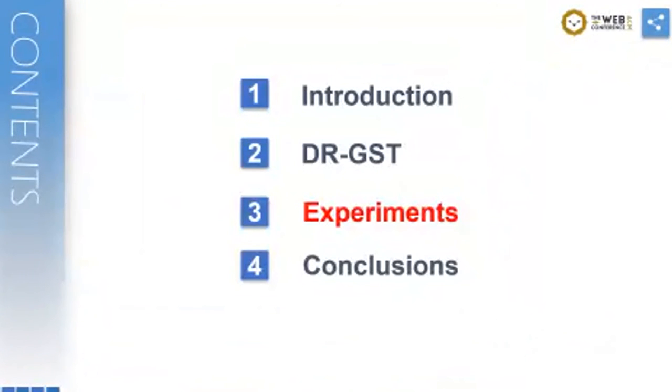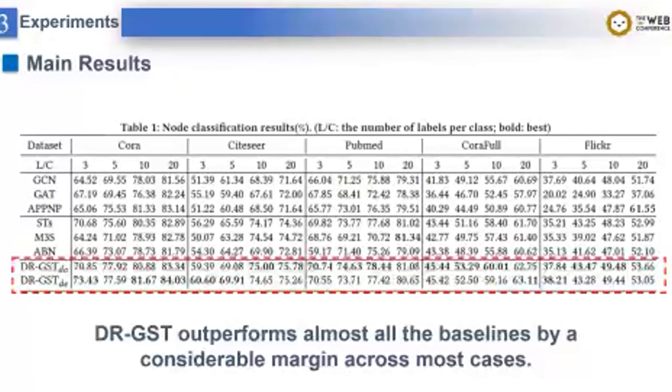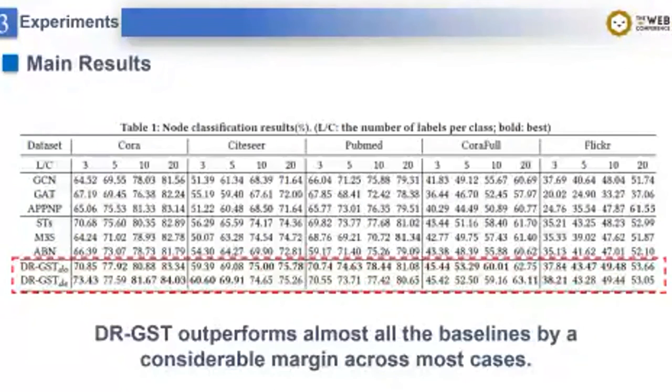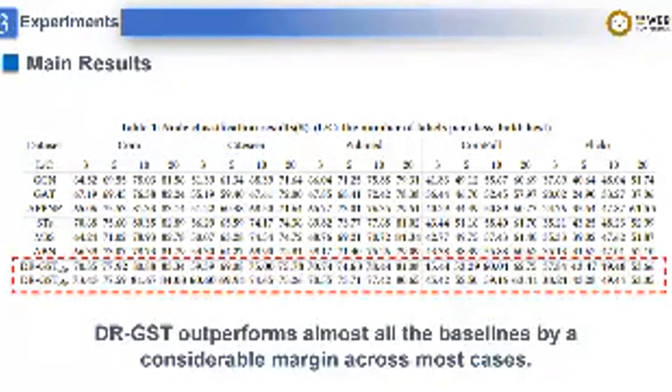Okay, now we come to the experiments. We conduct experiments on five datasets: Cora, Citeseer, PubMed, CoraFull, and Flickr, with four label rates: 3%, 5%, 10%, and 20%. We compare most graph self-training methods.